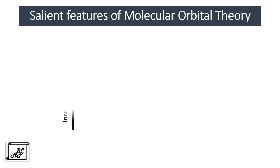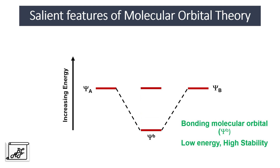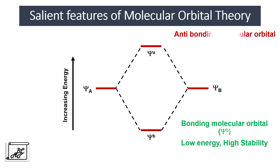Let's understand this diagrammatically. On the left-hand side we have increasing energy. On the two sides we have atomic orbitals of atom A and atom B. When they combine, two molecular orbitals are formed: one bonding and one antibonding. The antibonding molecular orbital has high energy and less stability.